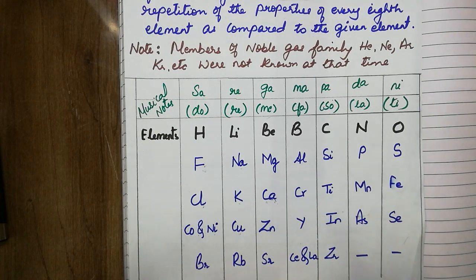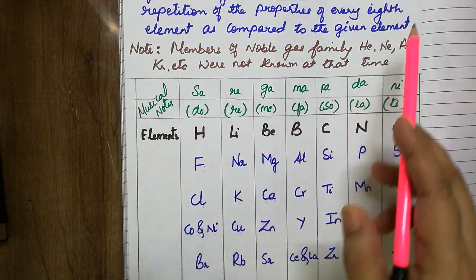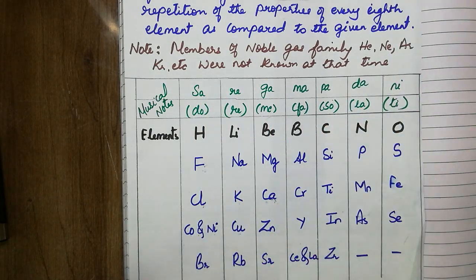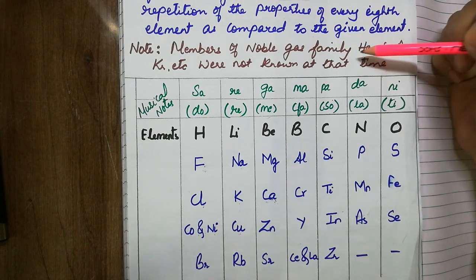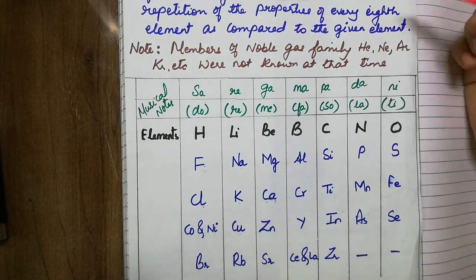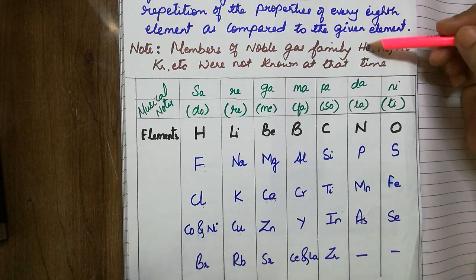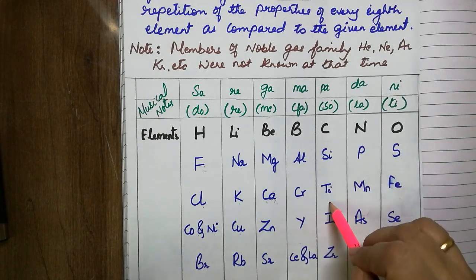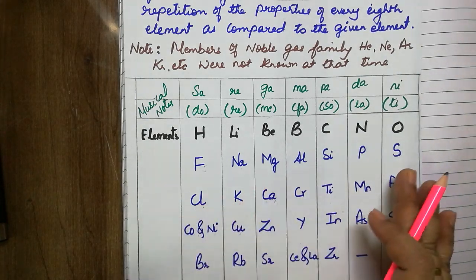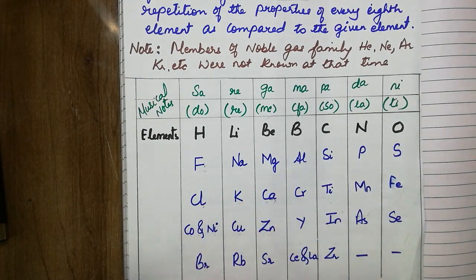Third limitation is the inclusion of members of noble gas family. When later on the noble gas family were discovered, their inclusion into this table disturbed the whole setup or the whole arrangement of Newland's Law of Octaves.